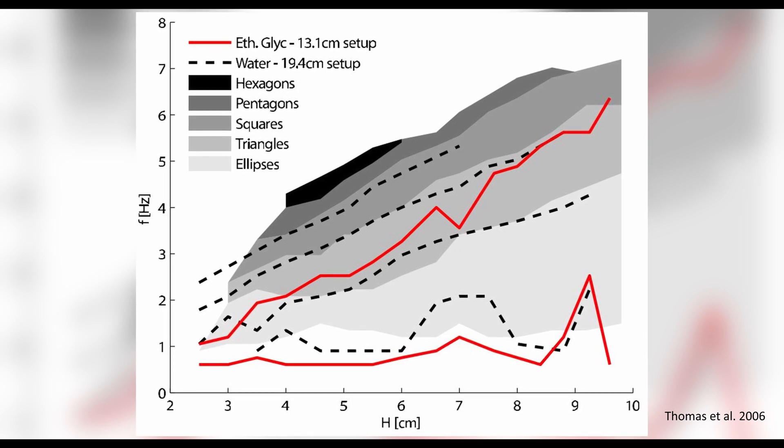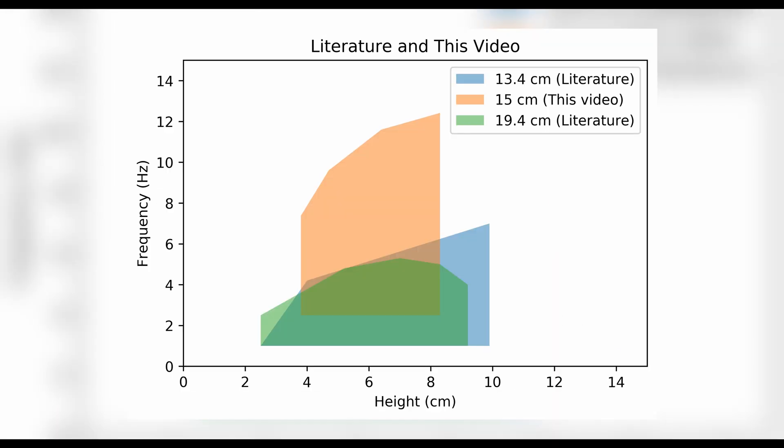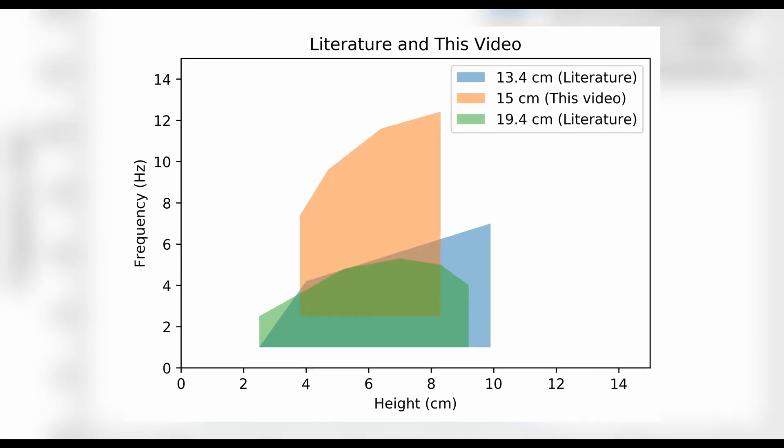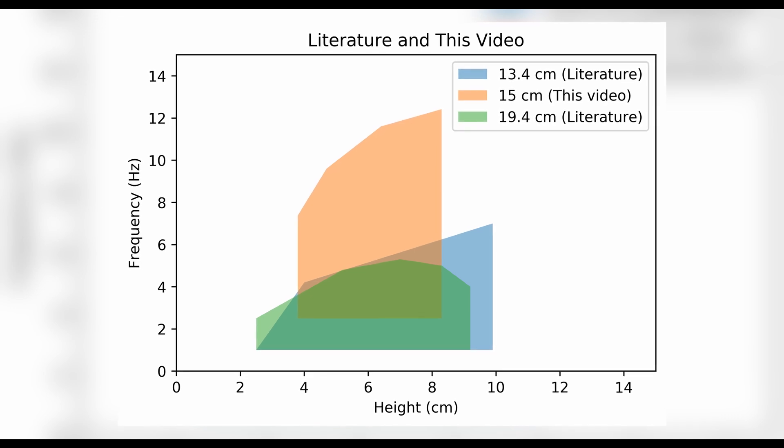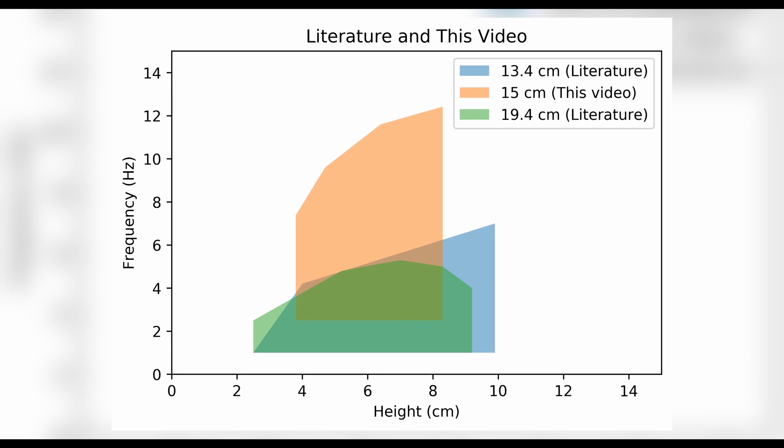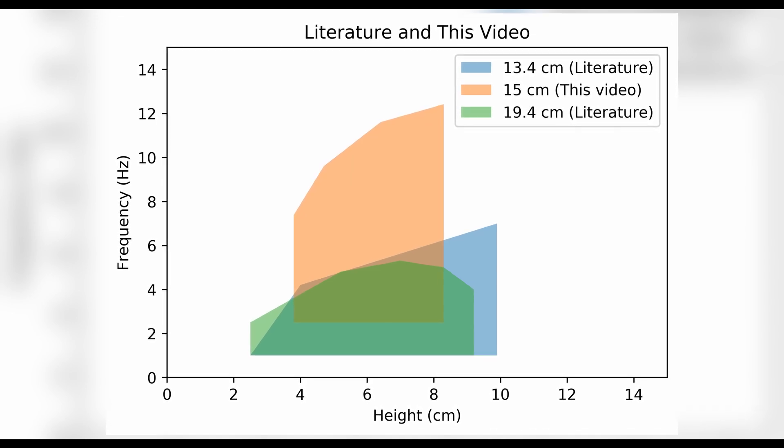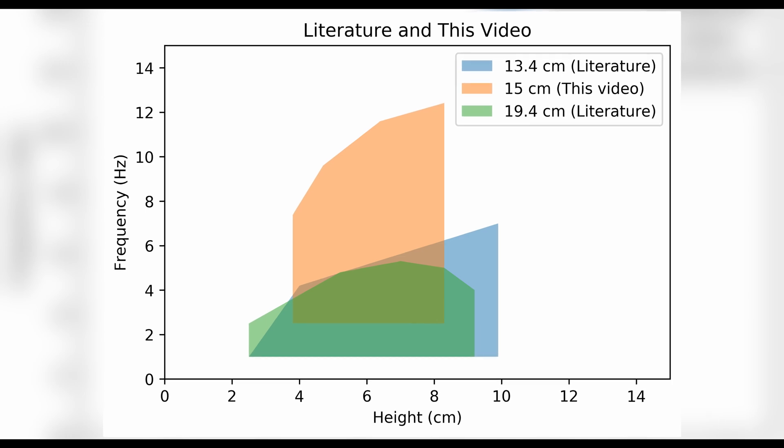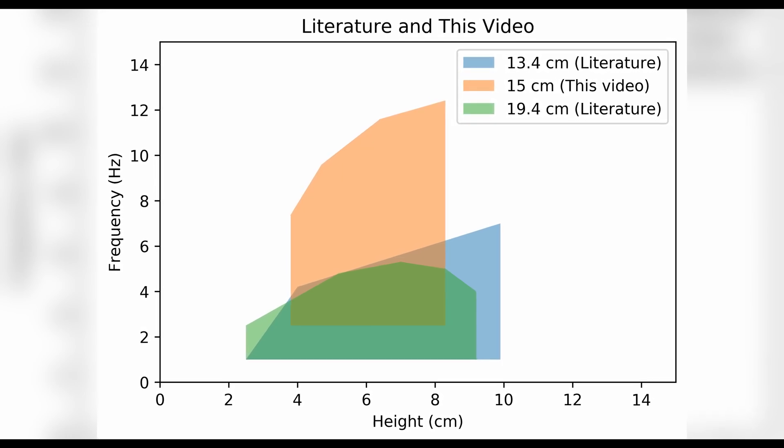To better illustrate the coverage of the parameter space, we could plot out both regions. It seems like in my setup, the frequency needed to be a lot higher in order to see the polygons. I'm not entirely sure why this is. Perhaps the way that the authors define a polygon is not exactly the same as how I defined it. If you have any thoughts or ideas, please let me know in the comments down below.